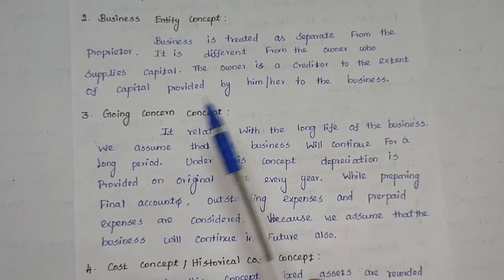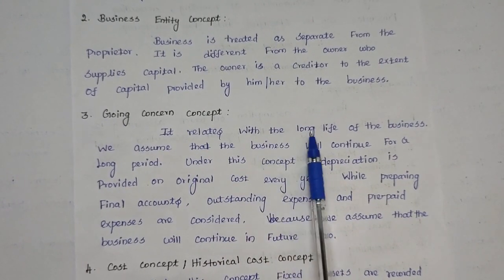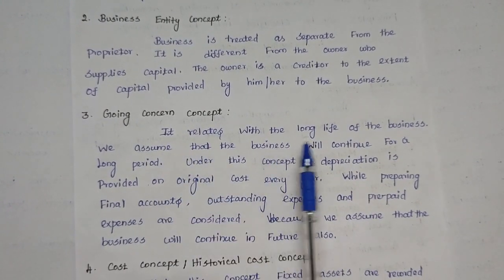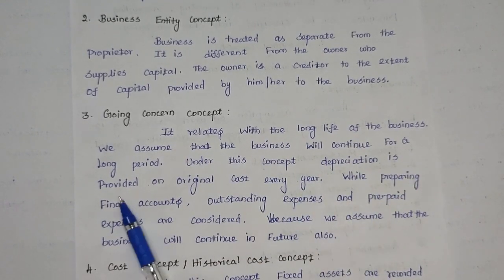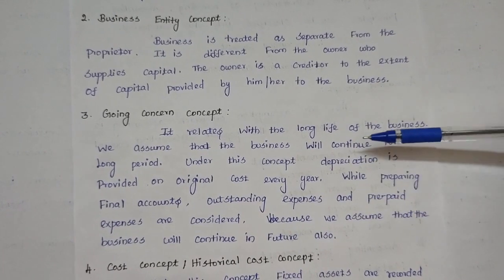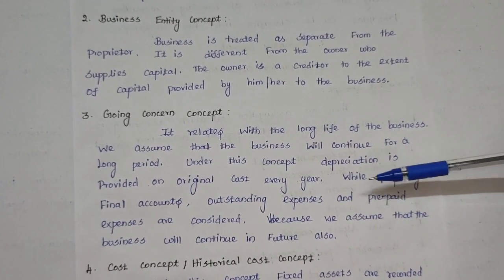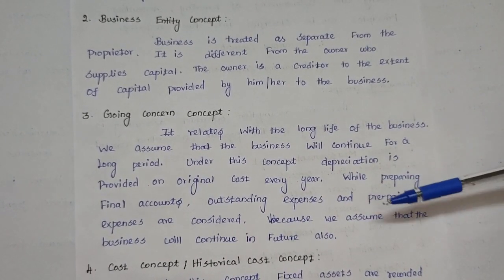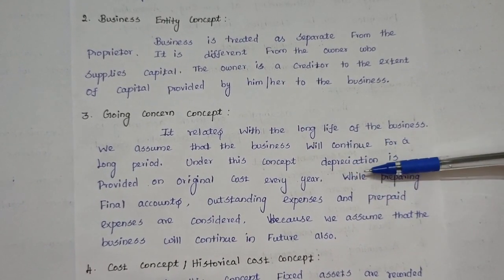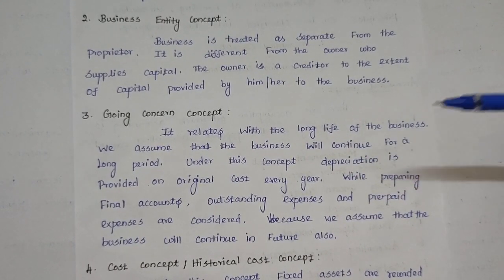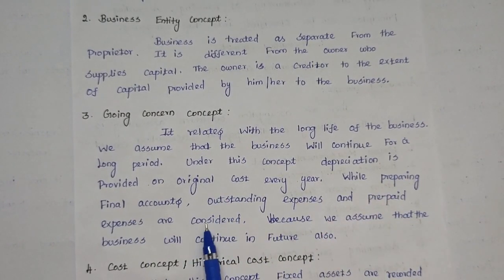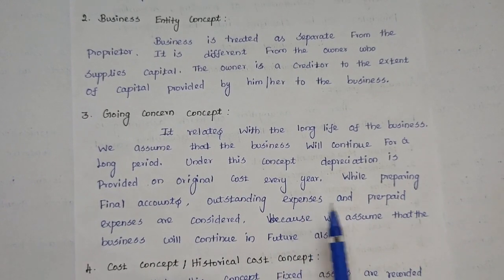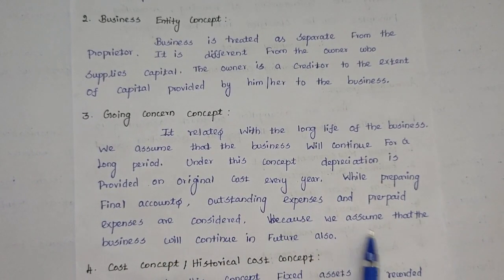The third concept is the going concern concept. It relates to the long life of the business. We assume that the business will continue for a long period. Under this concept, depreciation is provided. When we start a business, we assume it will continue long into the future.